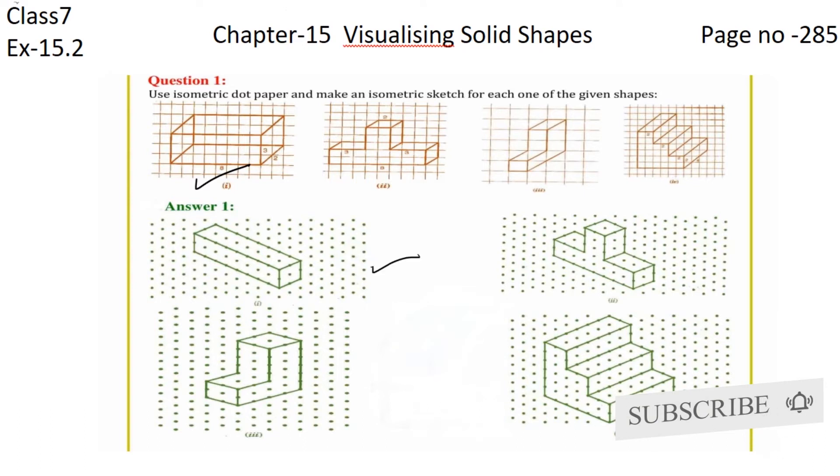This is the isometric sketch of the first figure. Now comes the second one, this is the second figure.